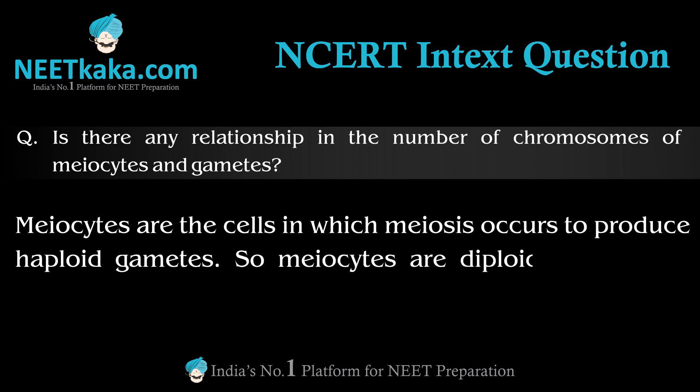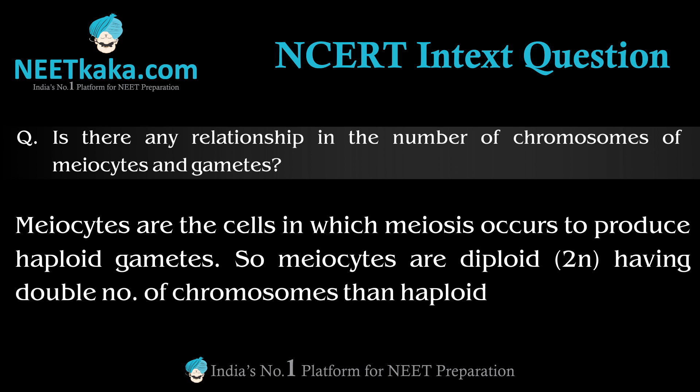Meiocytes are 2n, which means they have double the number of chromosomes compared to the haploid, or single number of chromosomes in gametes. So gametes have n number of chromosomes.